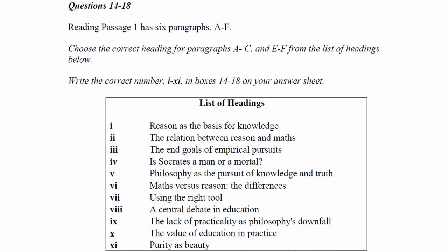So the first question in reading passage 2 is a list of headings question. Now with list of headings, it's okay to skim read even though there's some extra information because this will give you a general idea of the reading passage. So list of headings: reasons as the basis for knowledge, the relation between reasons and math, the end goals of empirical pursuits, is Socrates a man or a mortal, philosophy as the pursuit of knowledge and truth, math versus reason the differences, using the right tool, essential debate in education, the lack of practicality as philosophy's downfall, the value of education and practice, and purity as beauty. Okay great, so clearly this passage will be about philosophy and what is philosophy and why is philosophy studied.